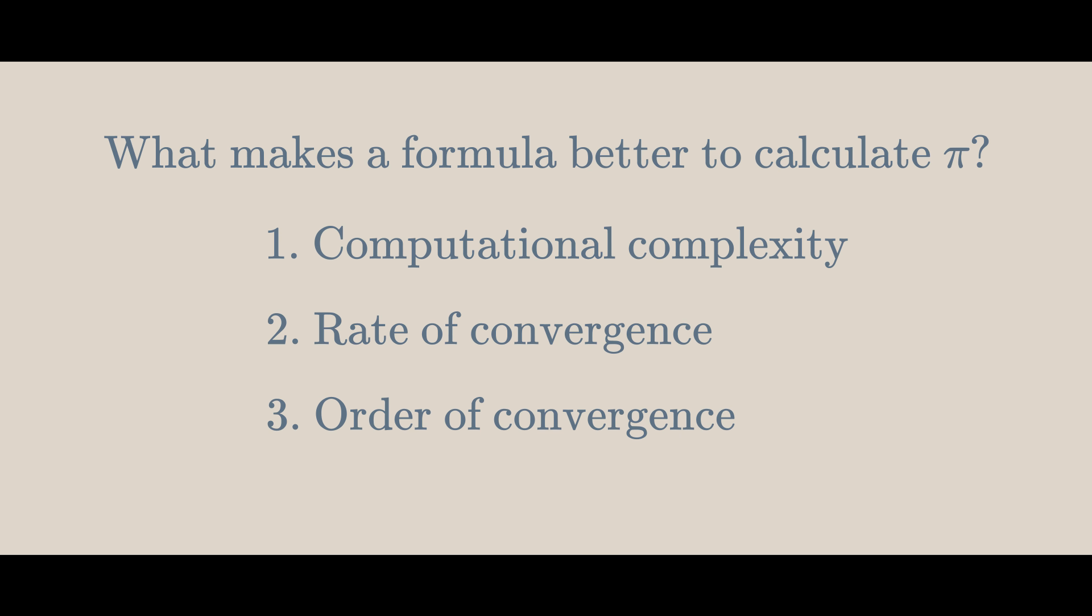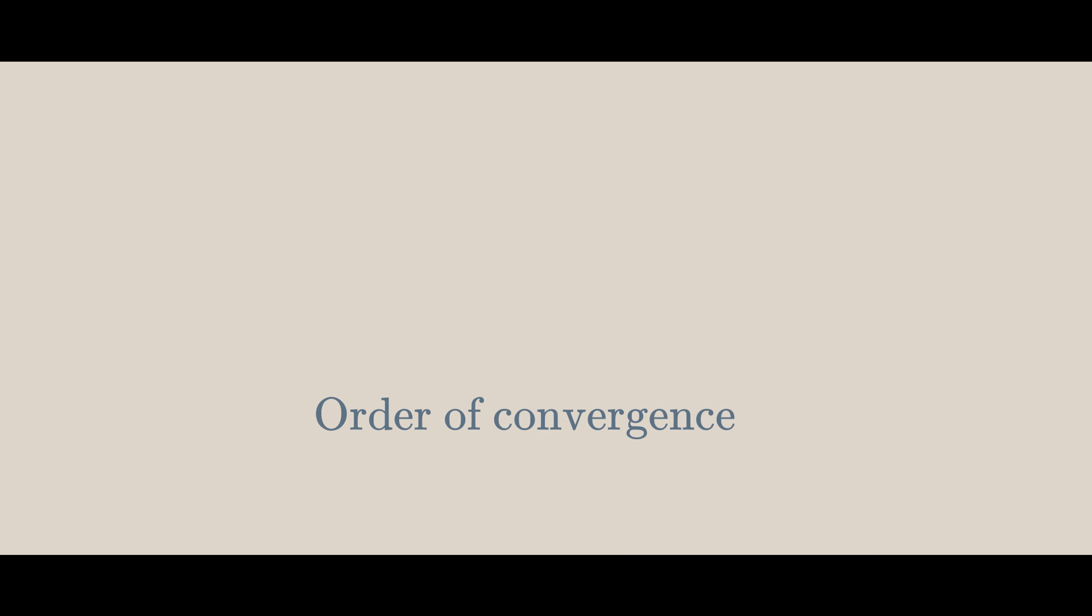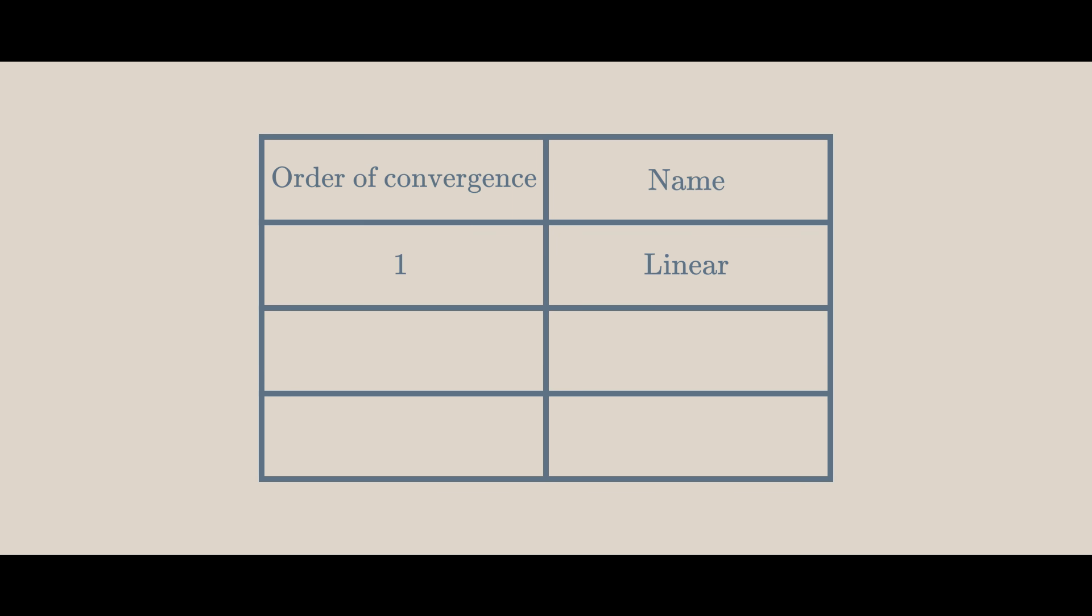The last thing I want to talk about is the order of convergence. Something like the Chudnovsky algorithm has a linear convergence, order one, because it gains approximately a constant amount of correct digits per term.